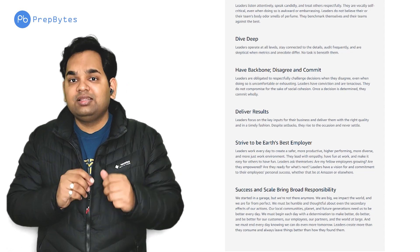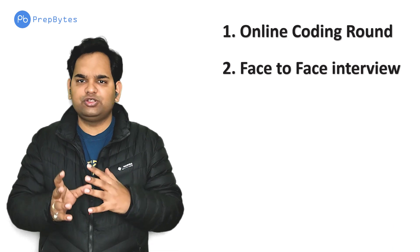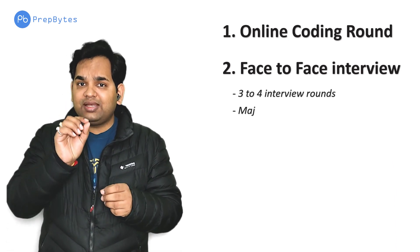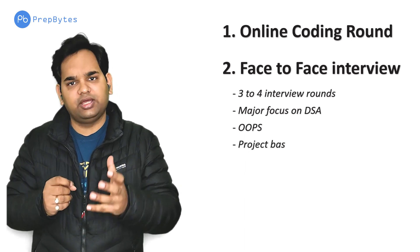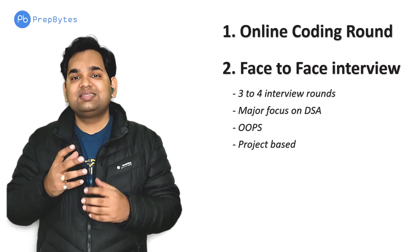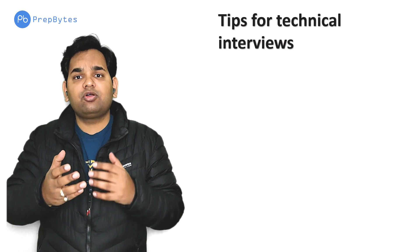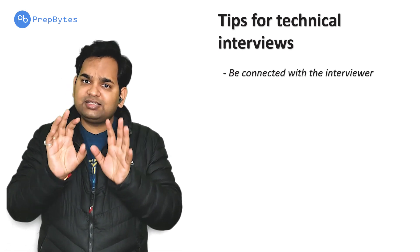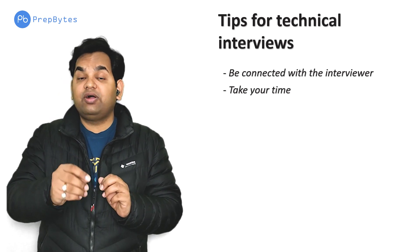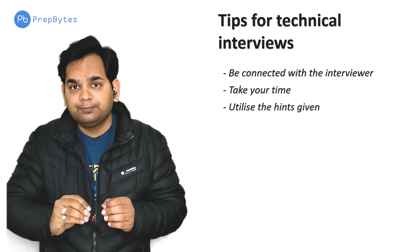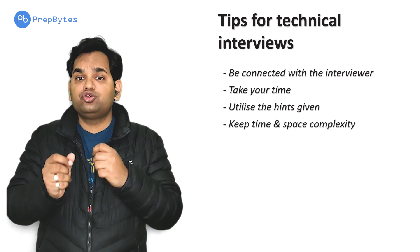If you clear the online round, you move to the face-to-face interview rounds — there will be three to four of them. In those rounds, 90 to 95 percent of questions will be data structures and algorithms based. There can also be some OOP and project-related questions depending on the interviewer. Remember to stay connected with the interviewer — discuss your initial approach, take time to think of the optimized solution, and be open to hints. Also be very aware and confident in time and space complexities.